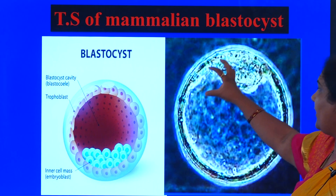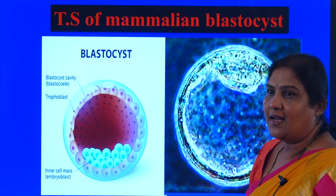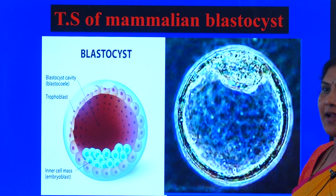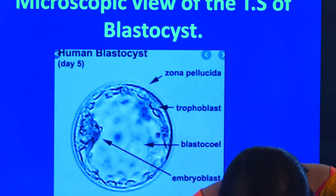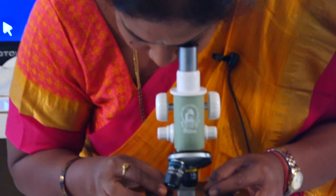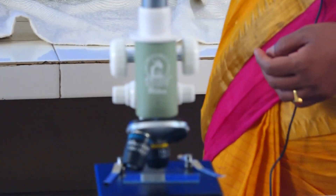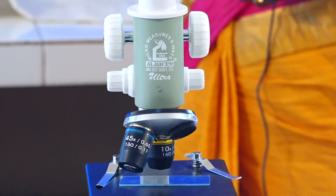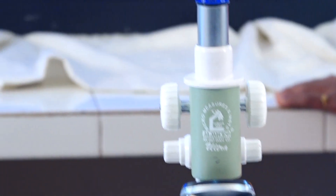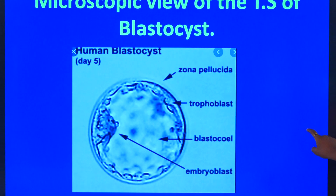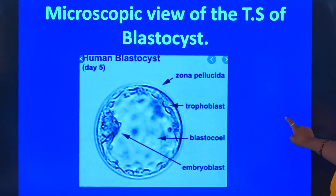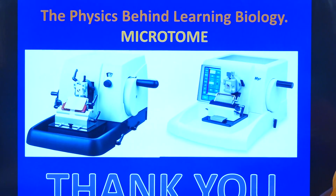The zona pellucida beautifully protects the blastocyst until it begins implantation. During examination, we would focus the slide and write down the characteristic features after identification. The inner mass of cells is also called the embryoblast.